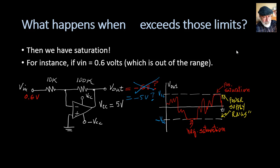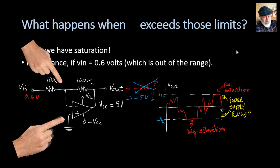In short, we guess that the output is going to be negative 5 volts, and we have to prove it. Prove it how? By computing Vn and Vp and ensuring that Vn is greater than Vp, which is a negative saturation condition, right?